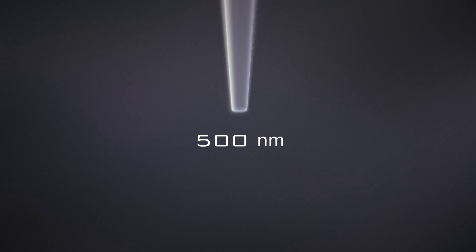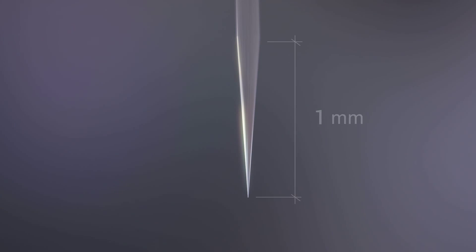Etched with a tapered diameter as small as 500 nanometers, the tapered region about 1 mm long is covered with reflective metal in order to avoid uncontrolled leakage of light.